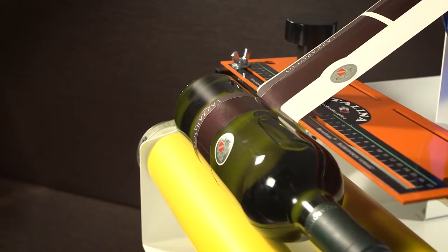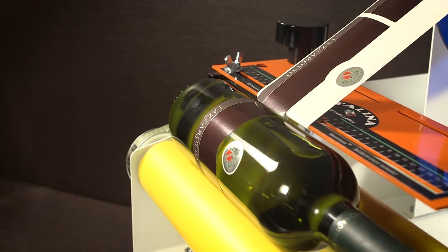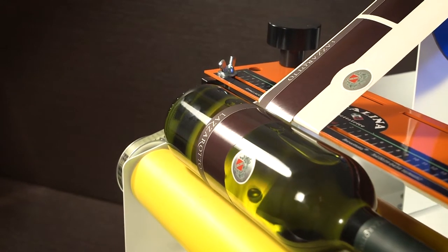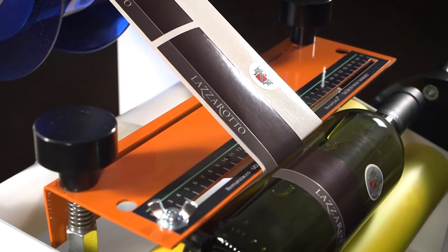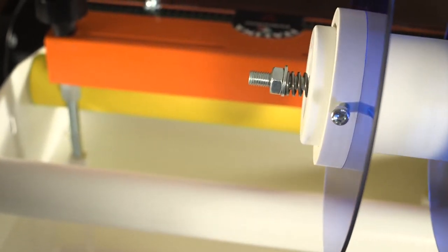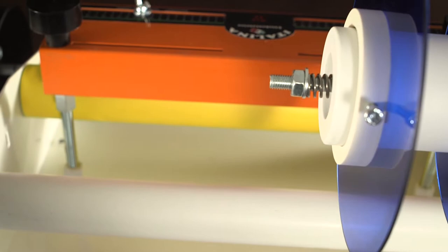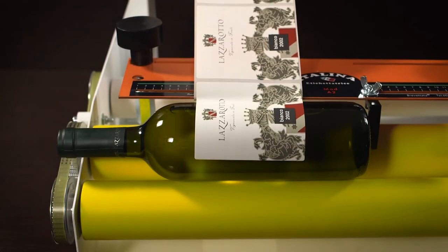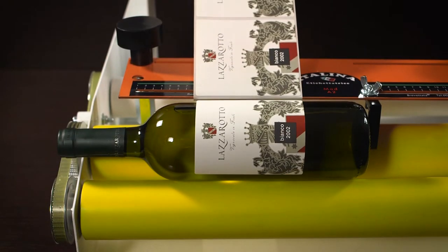In order to obtain maximum accuracy in the application, the labels must always be taut. You can improve the adjustment by screwing the nut if you want to increase tension, or unscrew it if it gives too much resistance to the advancement of the label.